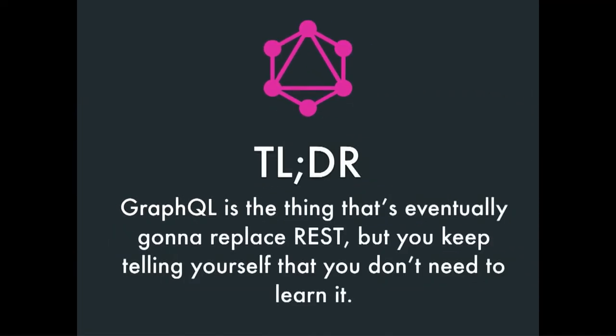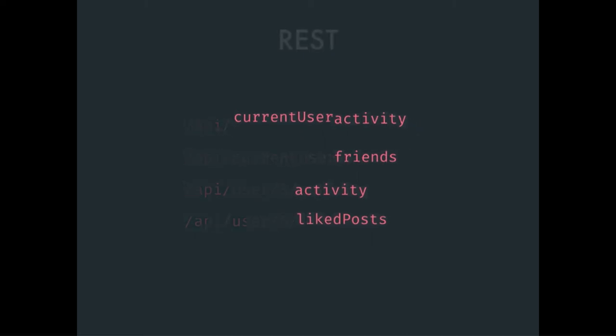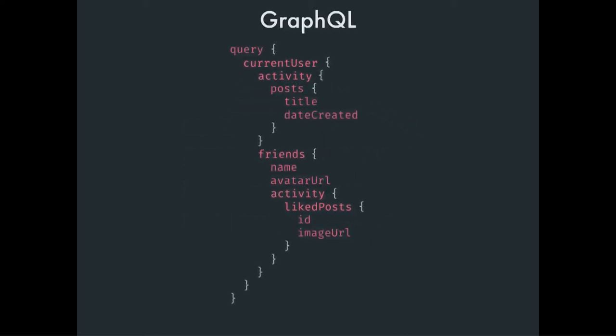The short version about what GraphQL is: it's the thing that is eventually going to replace REST, but you keep telling yourself that you don't have to know anything about it. So, we have REST — everyone knows about it. If you want to grab a bunch of things from a REST API, this is what we would do, right? We have to do multiple calls, combine them, grab the data. If we do the same thing in GraphQL, it would look something like this.